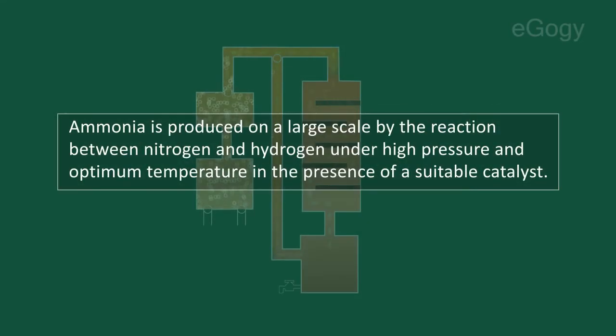Industrial production of ammonia. Ammonia is produced on a large scale by the reaction between nitrogen and hydrogen under high pressure and optimum temperature in the presence of a suitable catalyst.